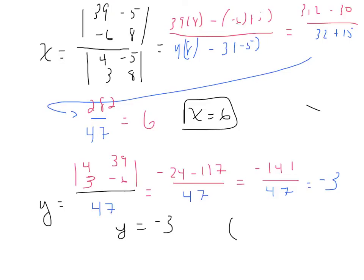Since we're solving for an ordered pair — the intersection point — we rewrite our answer as (6, negative 3). And that's our answer to this problem.